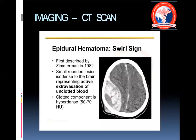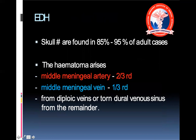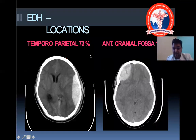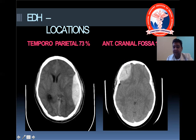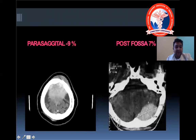The swirl sign, first described by Zimmerman in 1982, is a small rounded lesion representing active extravasation of unclotted blood — the clotted component is hyperdense (50–70 Hounsfield units) whereas the unclotted portion is hypodense. EDH arises from the middle meningeal artery in two-thirds of patients and from the diploic vein or torn dural venous sinus in the remainder. Locations: temporoparietal region 73%, anterior cranial fossa 11%, parasagittal region 9%, posterior fossa 7%.